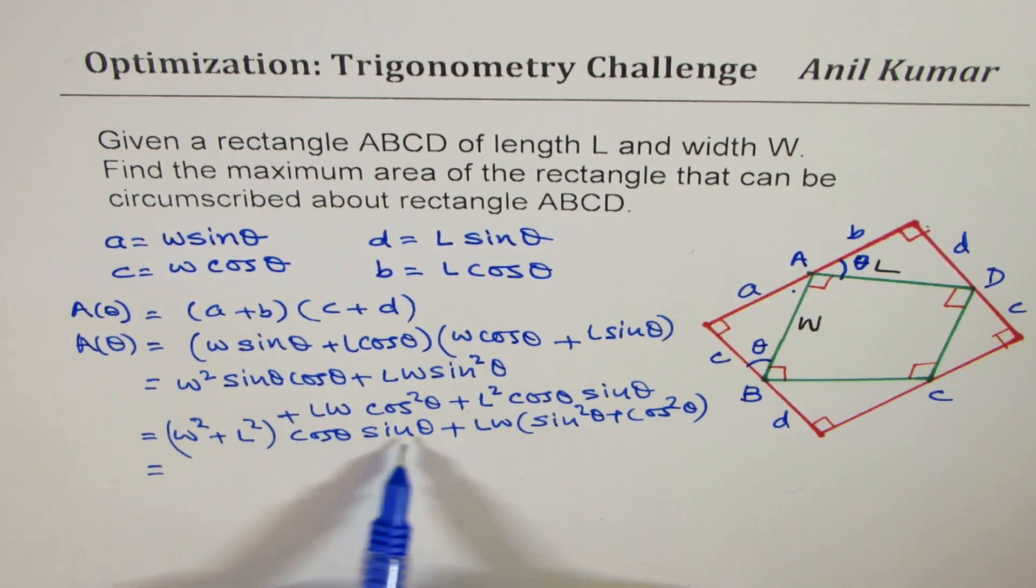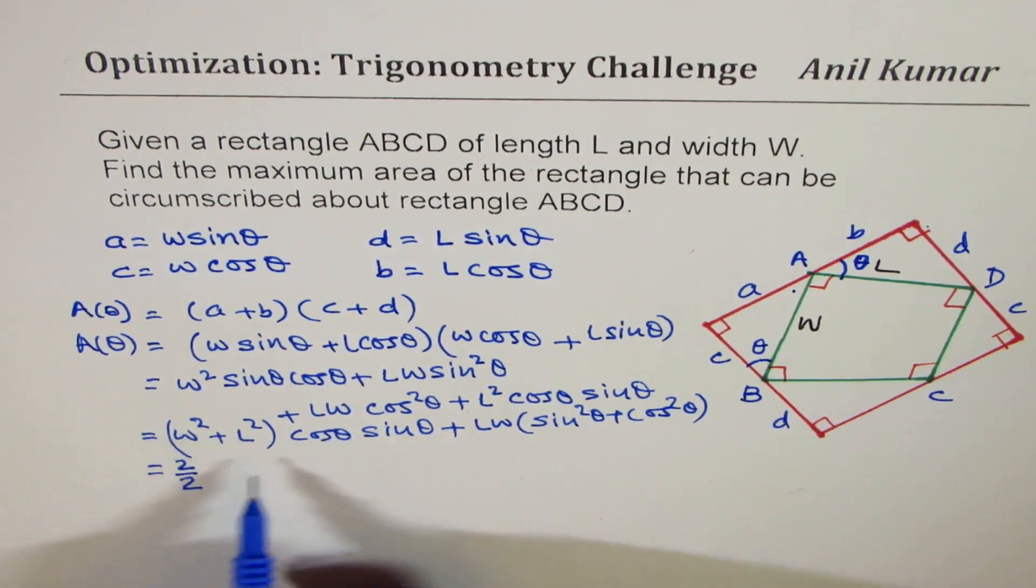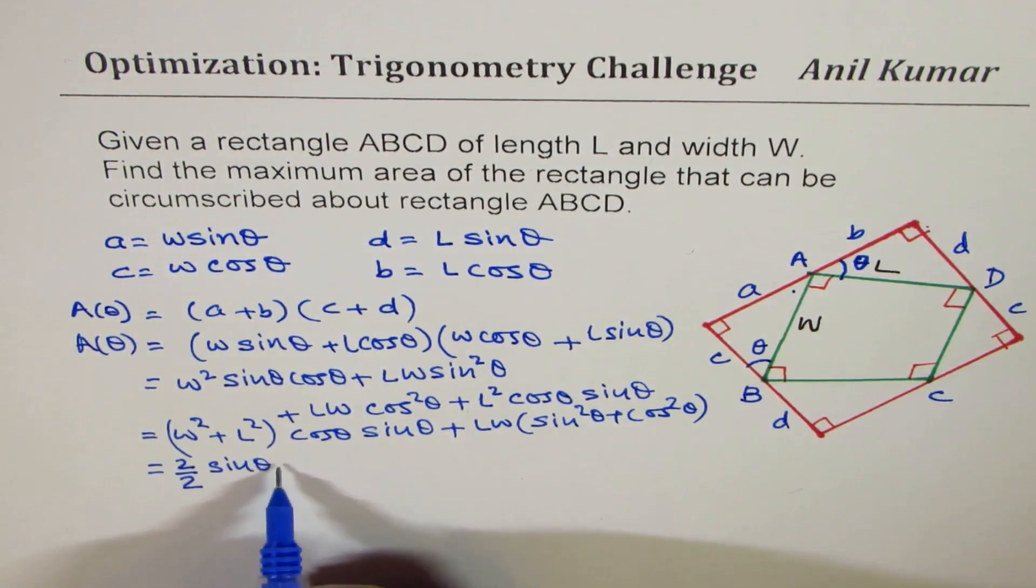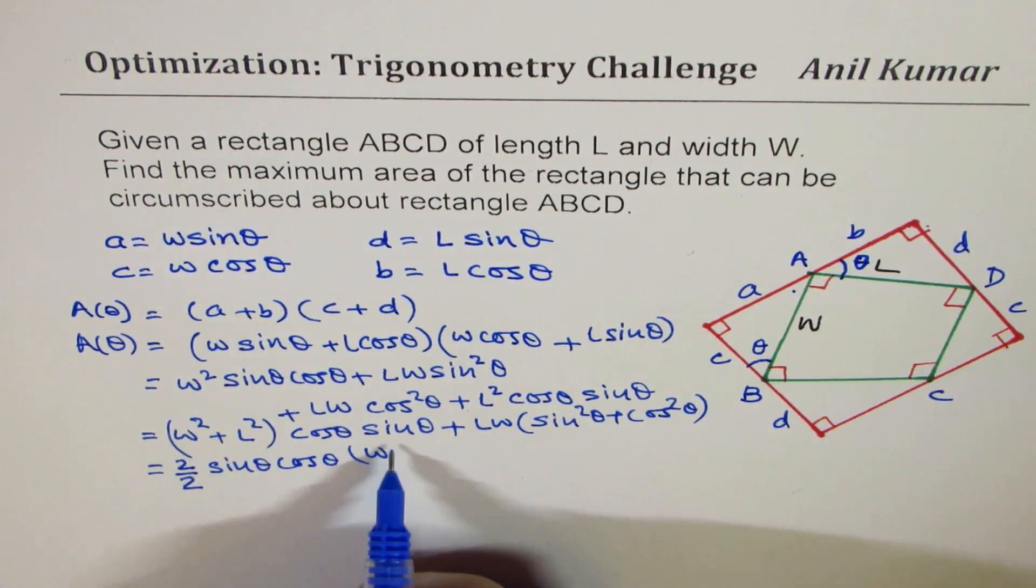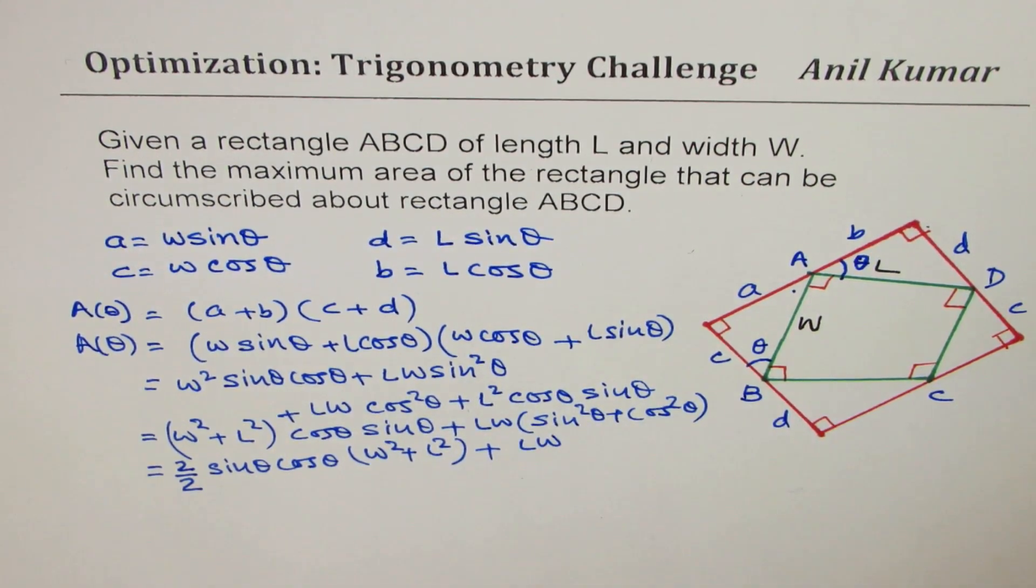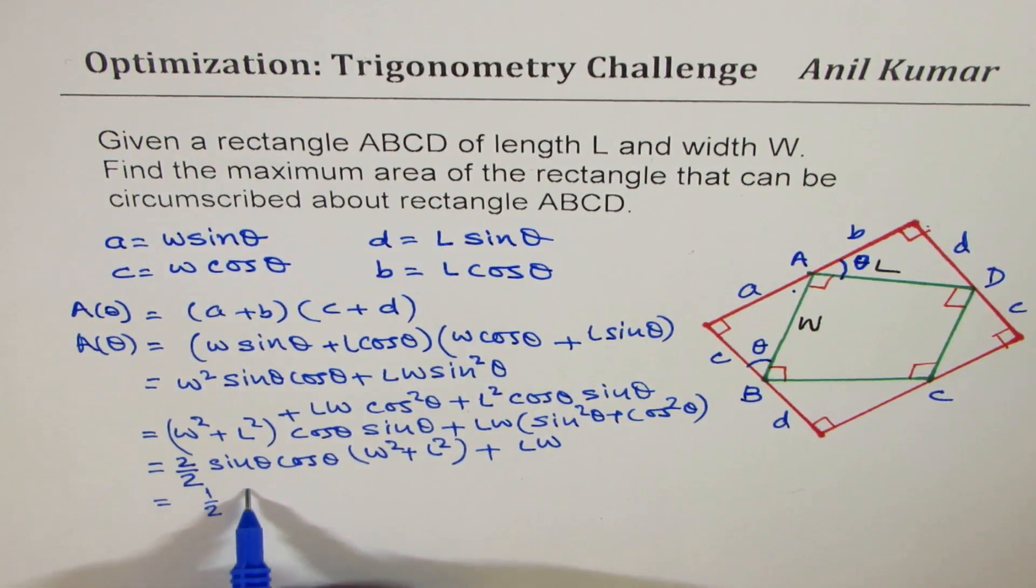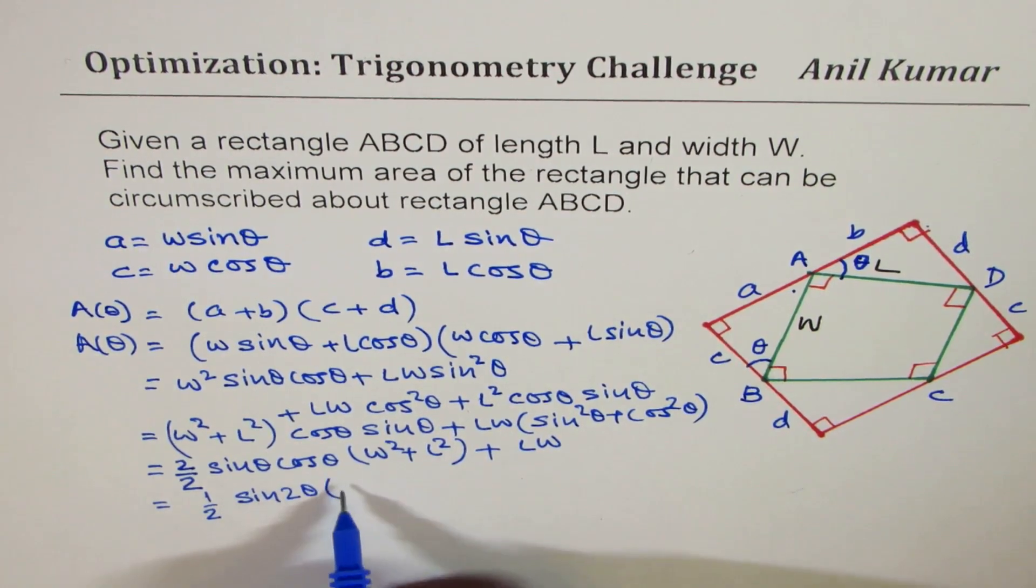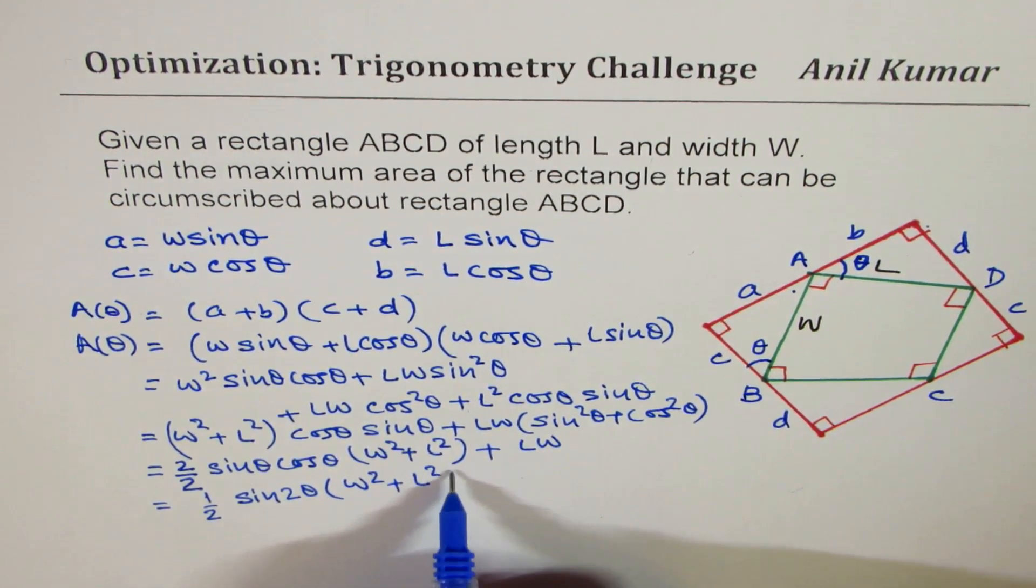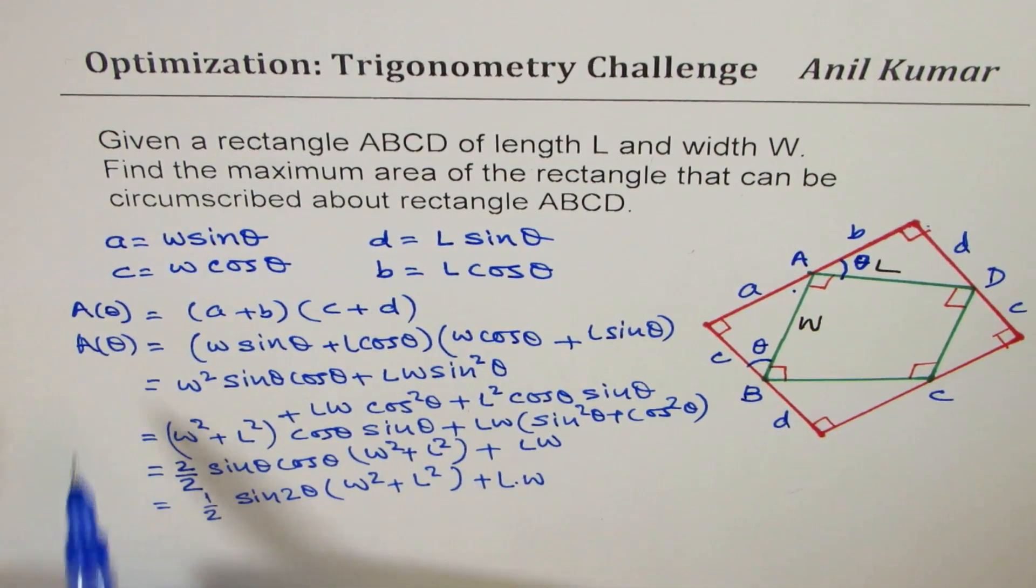And also, you will remember that sine theta cos theta could be written as sine 2 theta. So what we can do here is, for the first term, I will multiply and divide by 2, and then rewrite the whole expression as sine theta cos theta, and later we will write W square plus L square, plus here we have LW, right? Because sine square theta plus cos square theta is 1. Now, in this case, we can write this as half of sine 2 theta, times W square plus L square plus L times W. Now, we need to maximize area.